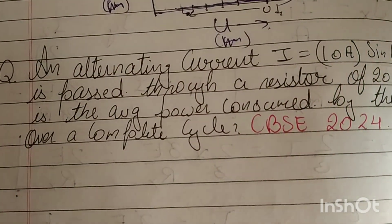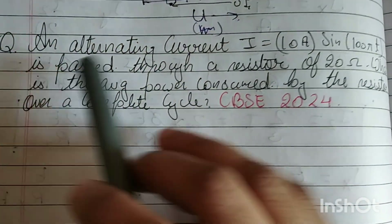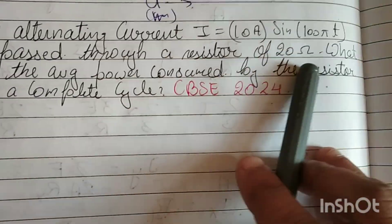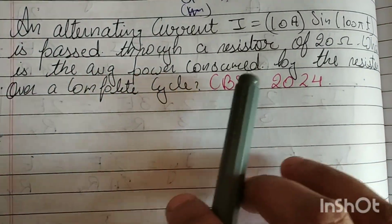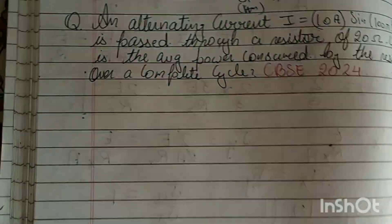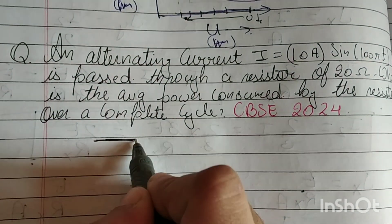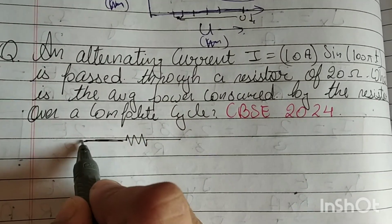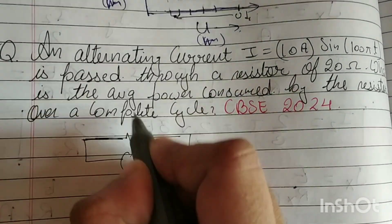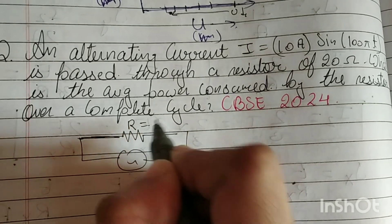Good afternoon students, next question: an alternating current is passed through a resistor of 20 ohms. What is the average power consumed by the resistor over a complete cycle? So here they have a resistor connected to an alternating source, and they have given the value of this resistor.